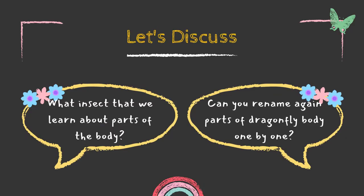Okay, so let's discuss. The first question: what insect did we learn about parts of the body? Can you guess what we just learned? What insect is that? Yes, it is a dragonfly.